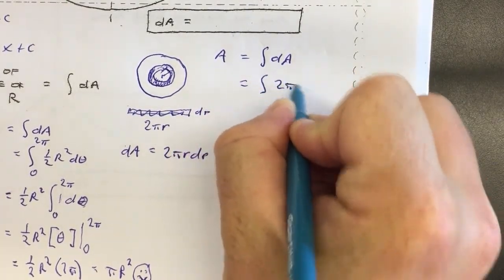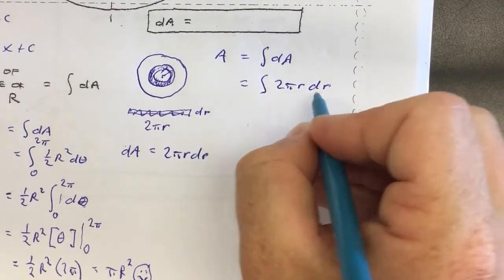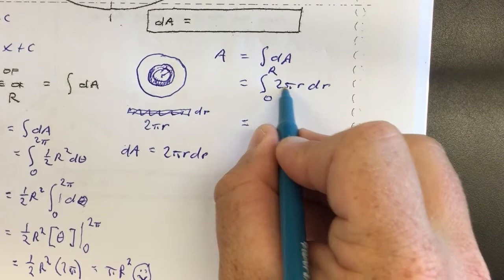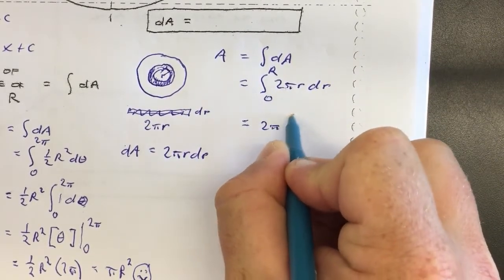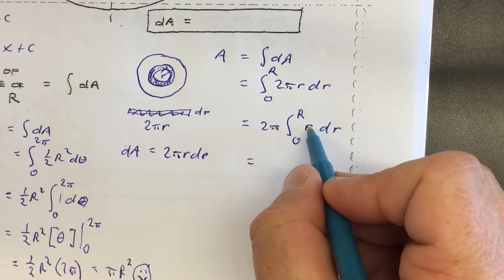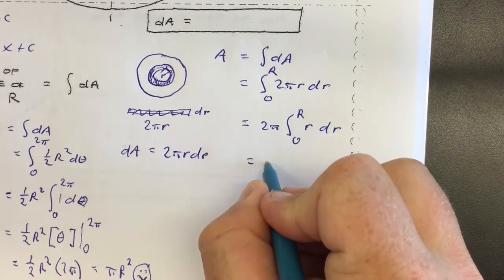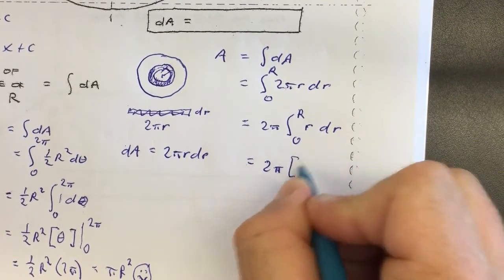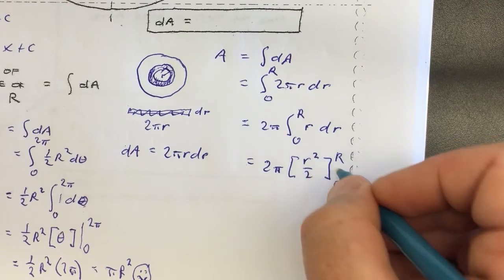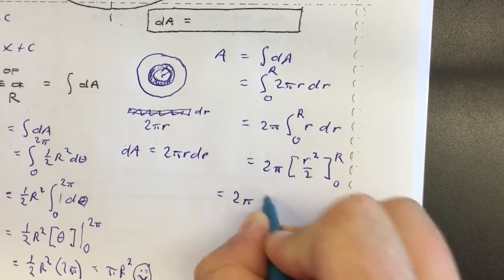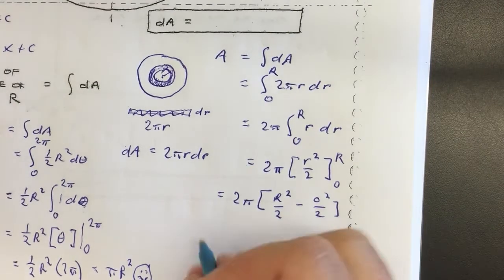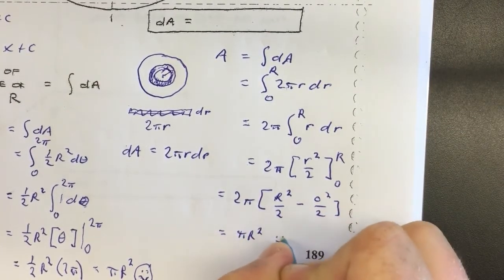Now we have an expression for how big each individual strip is — that's always the toughest part. We substitute it in: the area is the sum of 2πr·dr, integrating from 0 all the way out to big R. Since 2π is a constant it comes out front, and we need the antiderivative of r, which is r²/2. So we get 2π · [r²/2] from 0 to R = 2π · R²/2 = πR².